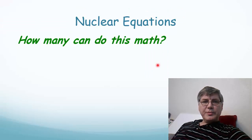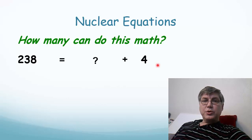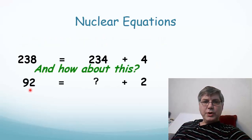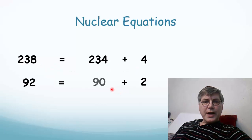So quickly, how many can do this math? 238 is equal to something plus 4. Most of you can probably get that. It's 234. How about this one? 92 is equal to something plus 2. Probably got that one too. That's 90. So now you know how easy it is to do nuclear equations.